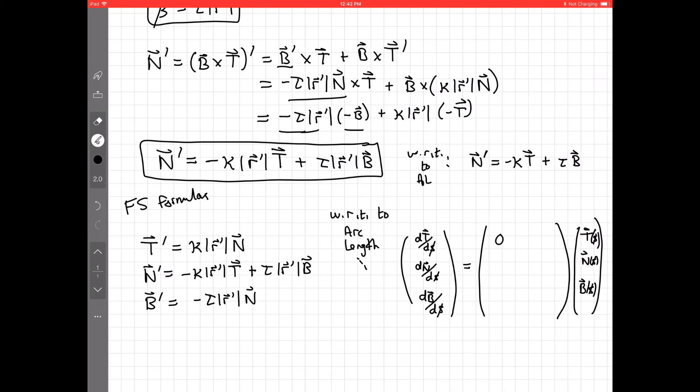Well, we have 0 kappa 0, negative kappa 0 tau, and then 0 negative tau 0. So we get a skew symmetric matrix. And this has various interesting consequences and very interesting things if we study differential geometry. That's rather important. And there's generalizations of this to higher dimensions.